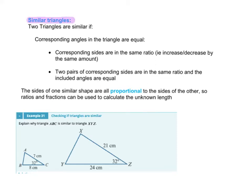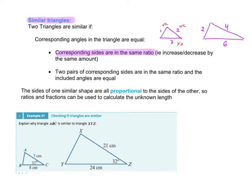Today we're looking at similar triangles. When we know they're similar, we can find unknown sides. But first you sometimes need to prove or know that the triangles are a similar shape. One way to determine whether triangles are similar is that their corresponding sides are in the same ratio. If a triangle has sides 1, 2, 3 and another has sides 2, 4, 6, all sides have been multiplied by two, so these two triangles are similar.